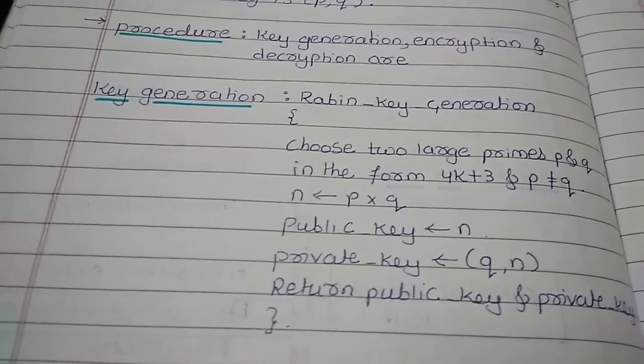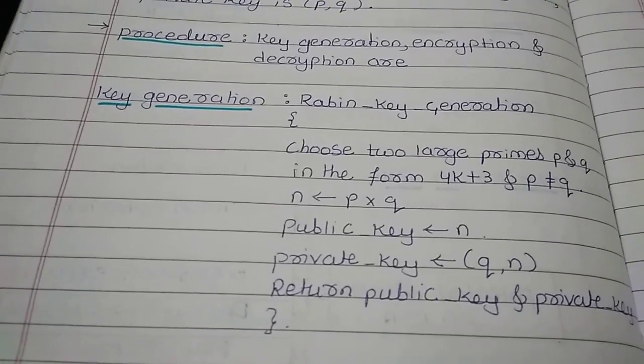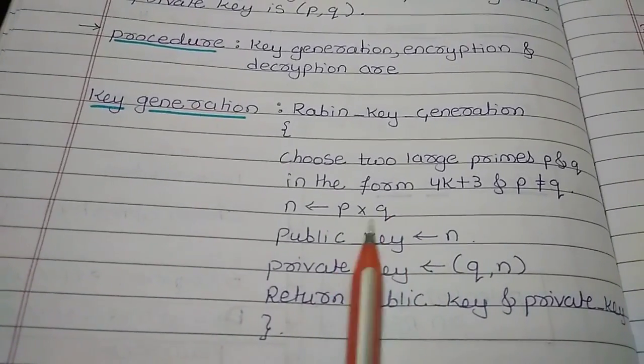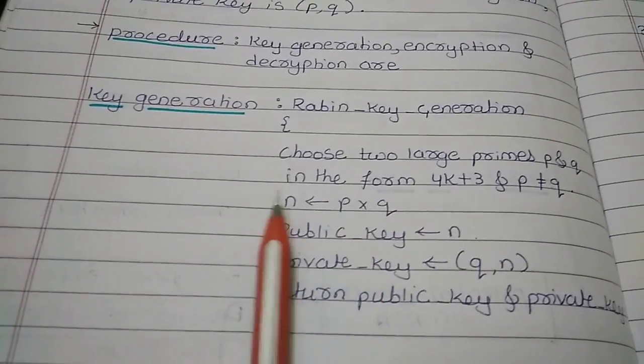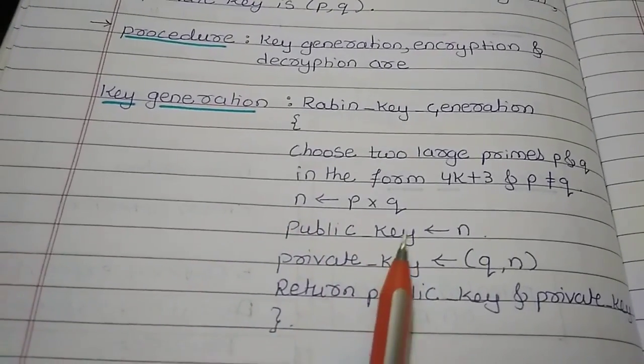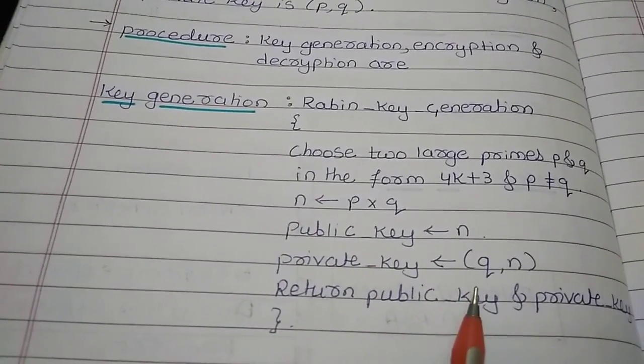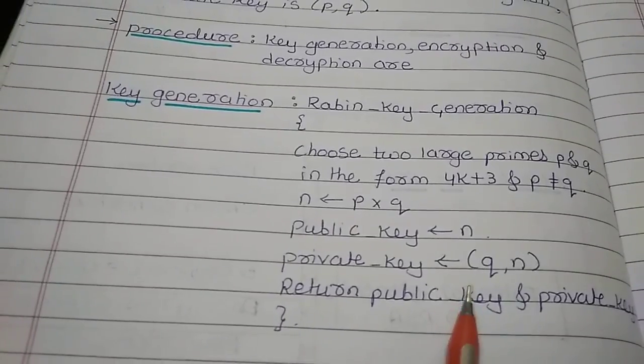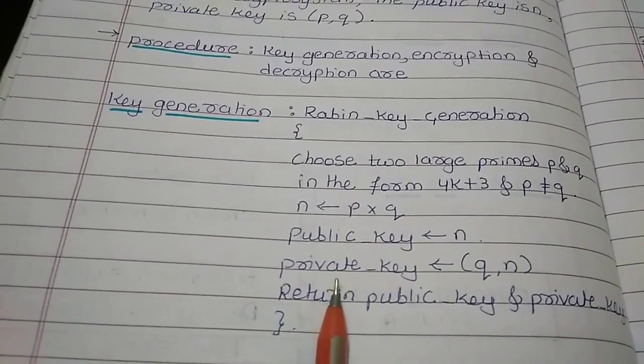And remember that the value of P and Q should not be same. After that we should perform the multiplication operation on P and Q so that we are obtaining the value of N. So that N is the public key and P and Q will act as the private key which is kept secret.